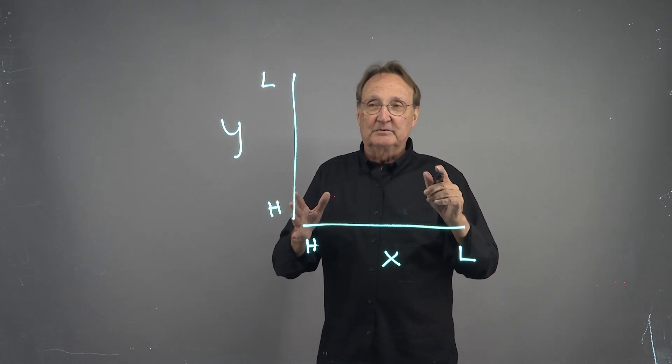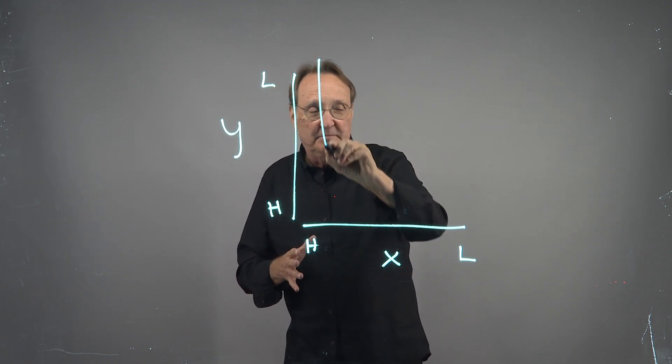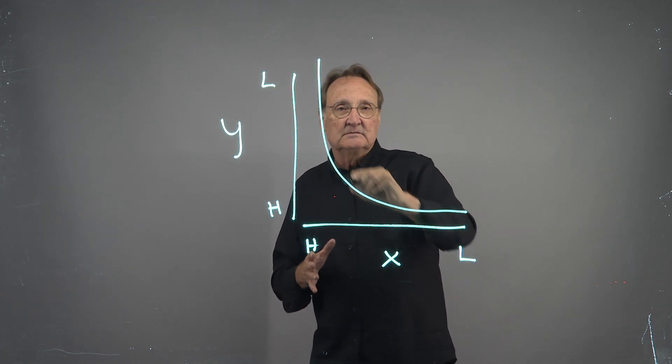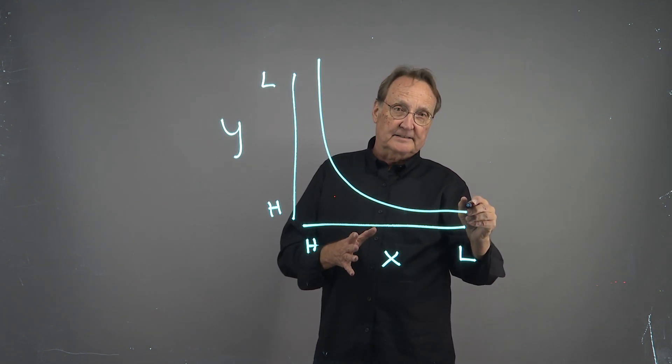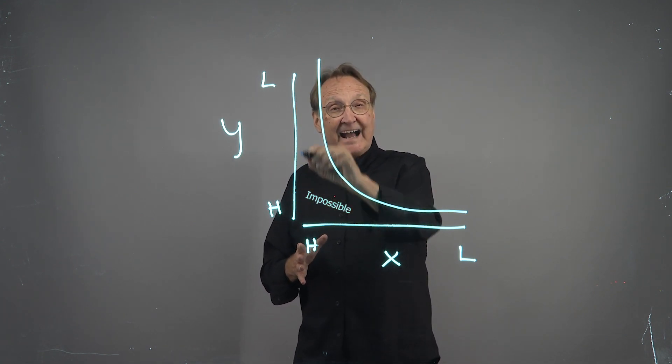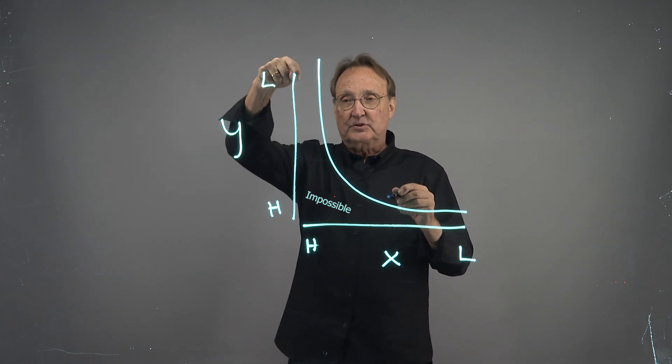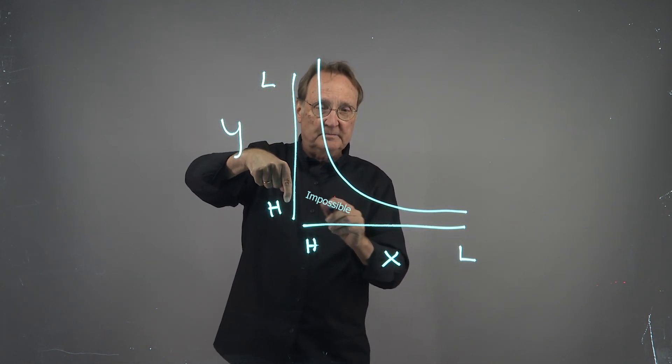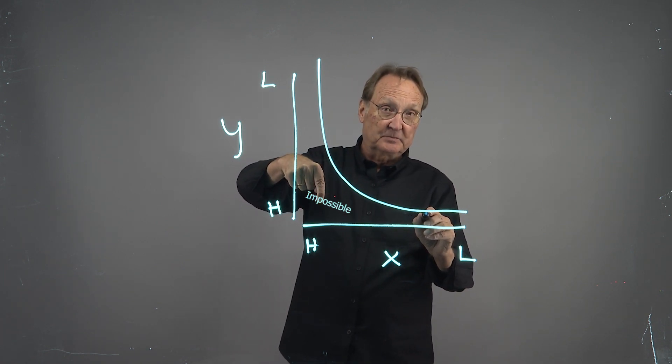Now, what's going on when it makes it a trade-off? It says that the best I can do is a curve something like this. That means this area here is impossible. I can't get there because of the trade-off. As I try to get higher on one dimension, I must get lower on the other dimension. That's what it means in the trade-off.